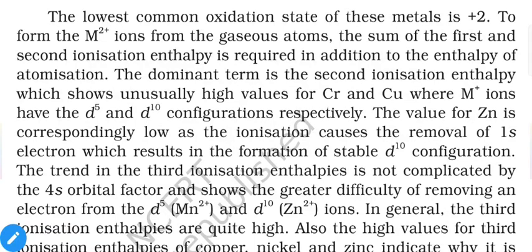The lowest common oxidation state of transition metals is +2, because all of them can release electrons from the 4s orbitals, and the majority contain two electrons in 4s. To form an M²⁺ ion from gaseous atoms, the sum of the first and second ionization enthalpies plus the enthalpy of atomization is required — these three types of reactions and their enthalpies are all needed.